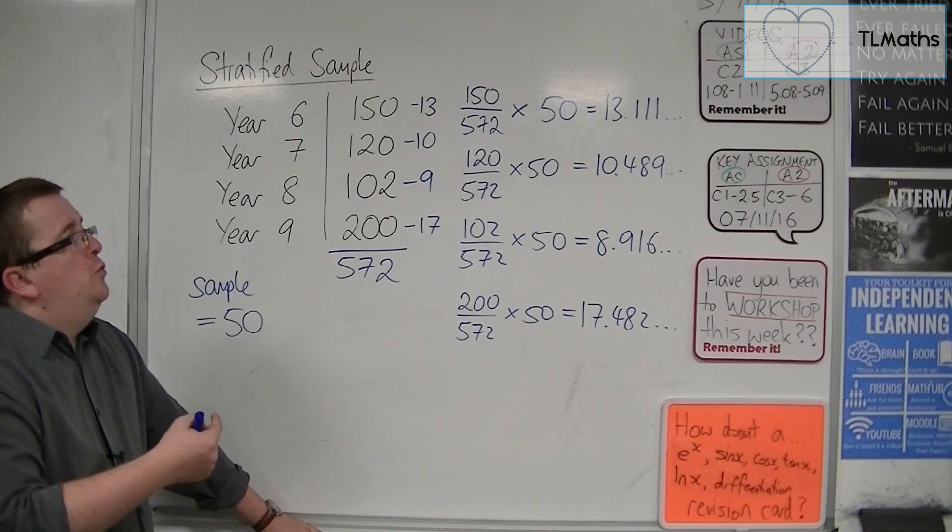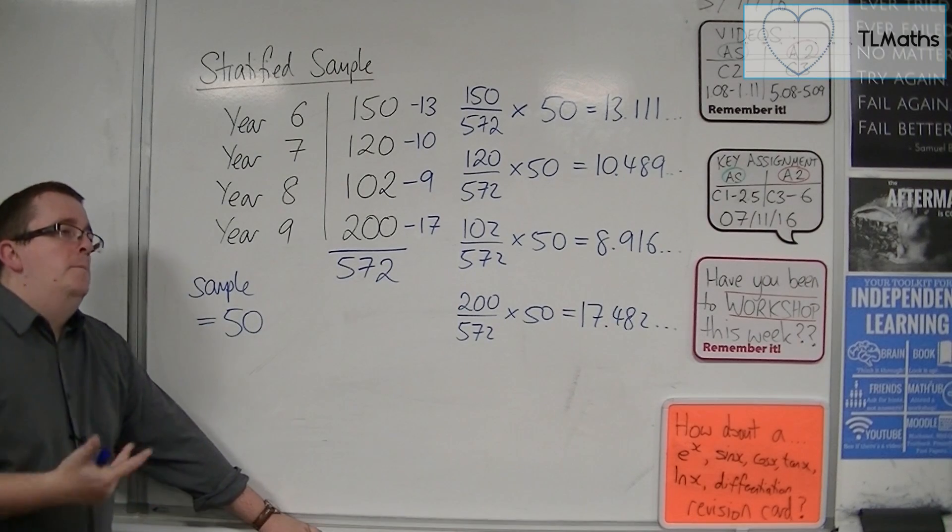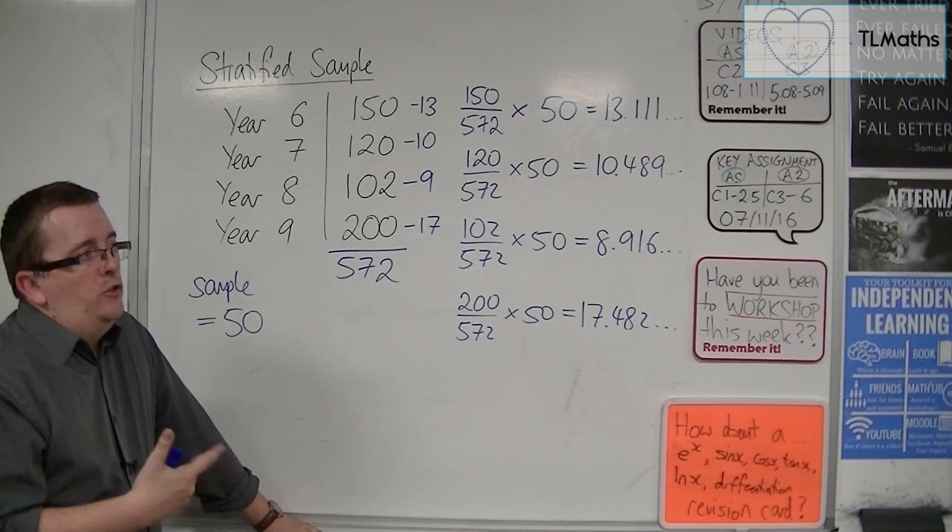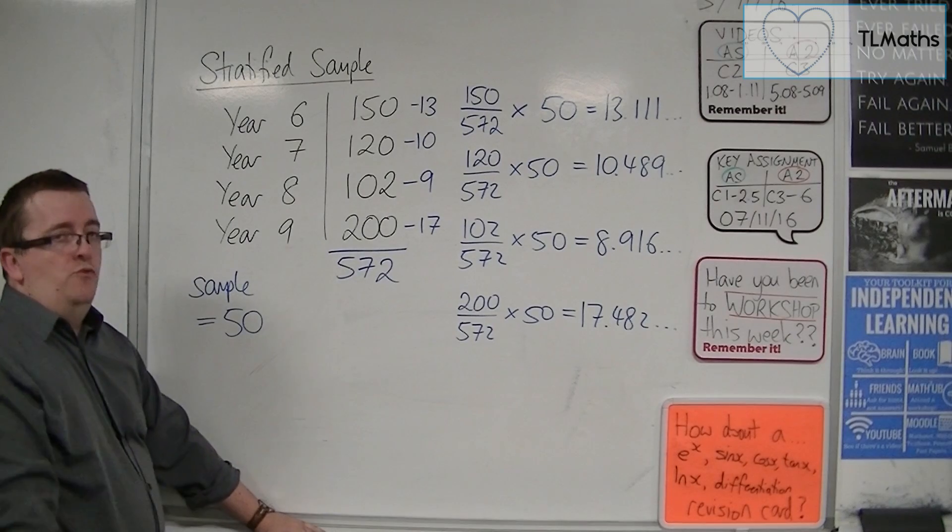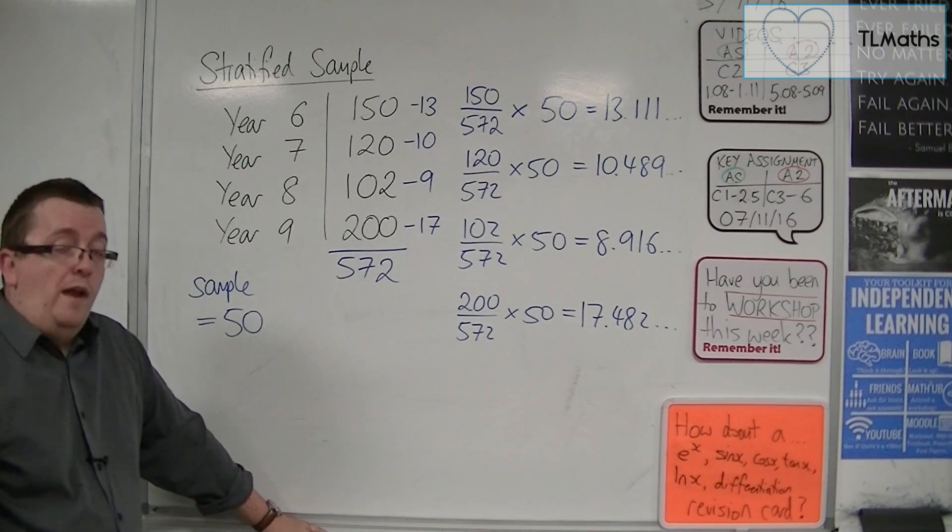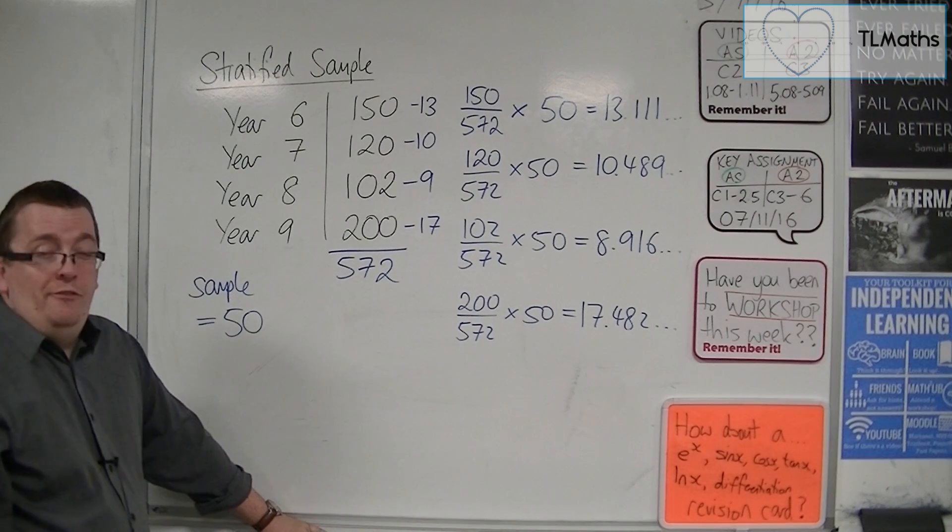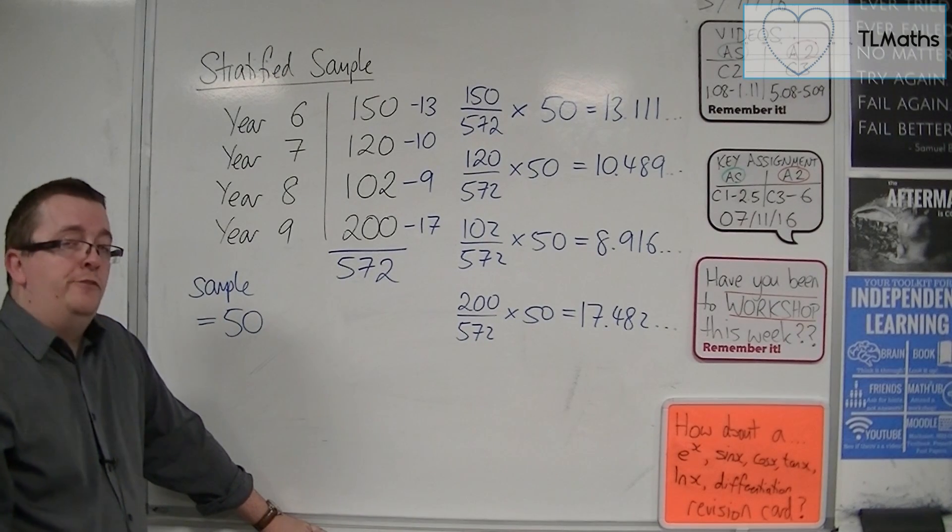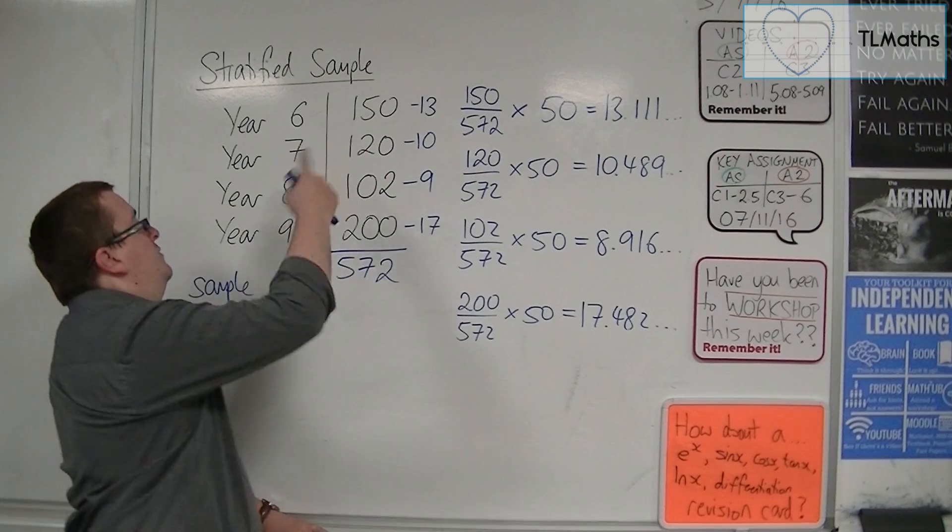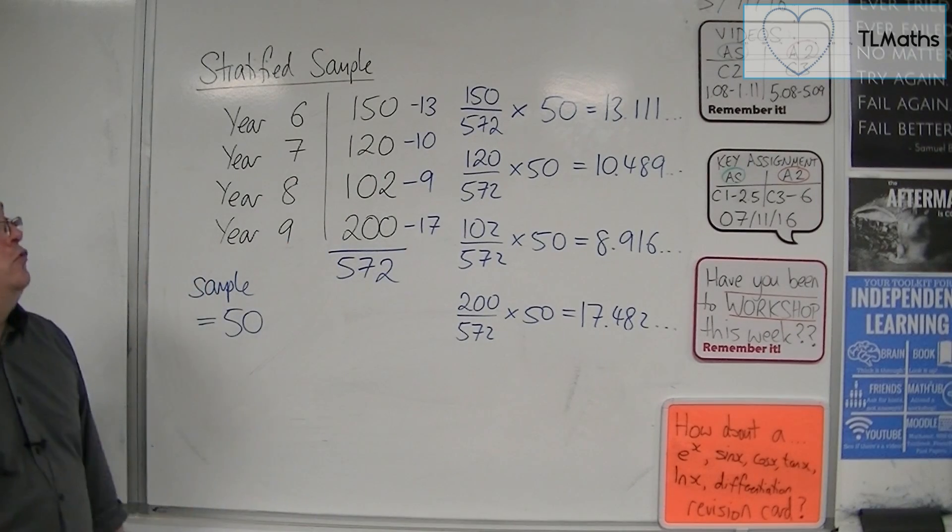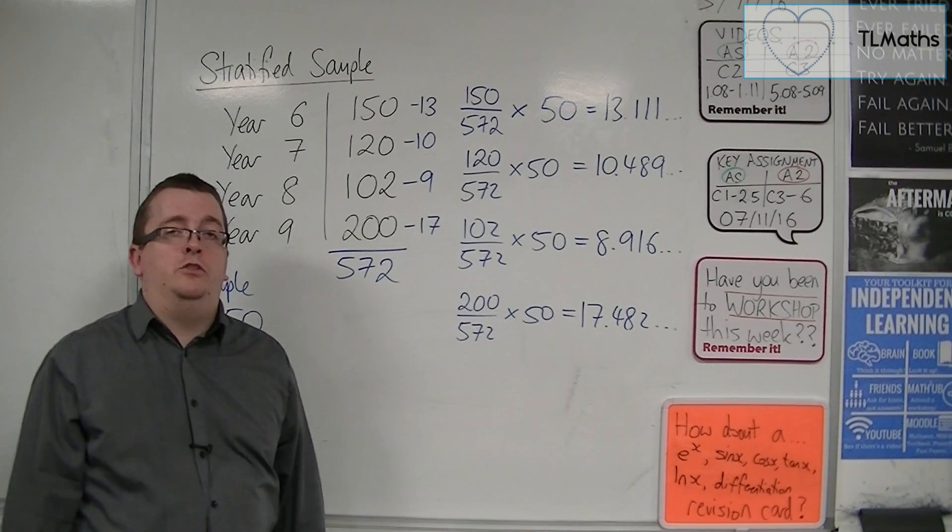So how you then deal with that process, if this was an actual real-life situation, you'd either have to change your sample size and just do a recalculation. So you might choose a sample of 51, for example, and recalculate. Or you just leave it at 49. Just hand it out to 49 students. Otherwise, if you then add that 1 back in to one of these groups, that group would then be over-inflated. So you've just got to think of it from a practical point of view.